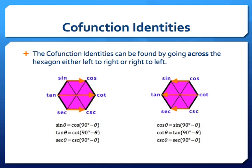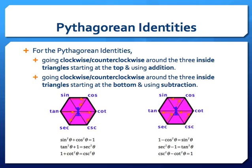For the Pythagorean identities, we can go clockwise or counterclockwise around the three inside triangles. Starting at the top and using addition: within the top triangle, sine squared plus cosine squared equals one. For the bottom triangles: tangent squared plus one equals secant squared, and one plus cotangent squared equals cosecant squared. If we start at the top and go either direction, we use addition.